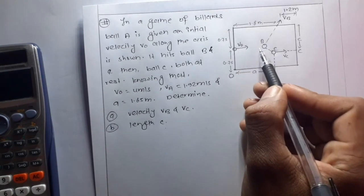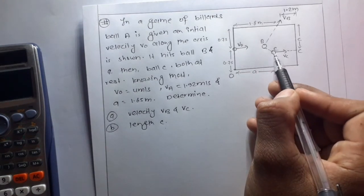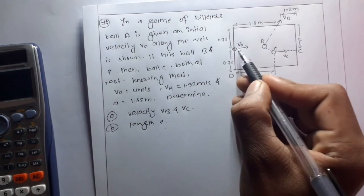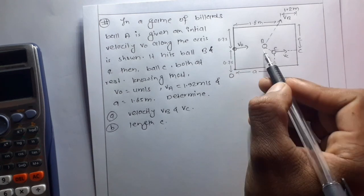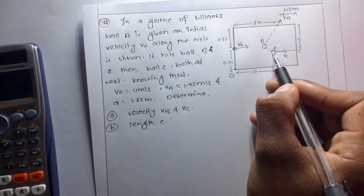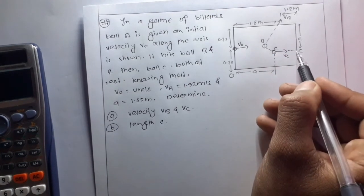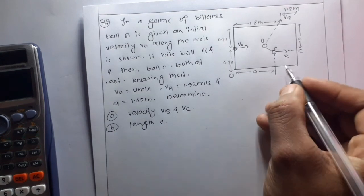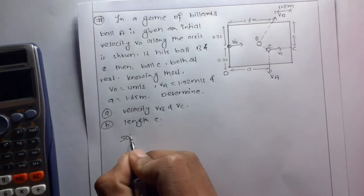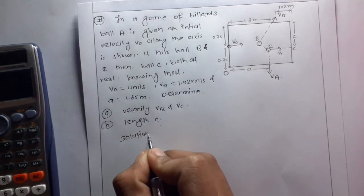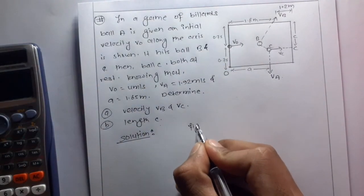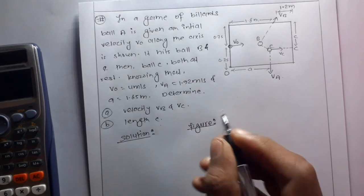Initially, ball B and ball C are at rest, and ball A has an initial velocity v0. First, ball A strikes ball B and then ball C. So ball B equals 0 and ball C equals 0 initially. For the solution, figure one shows the momentum diagram.